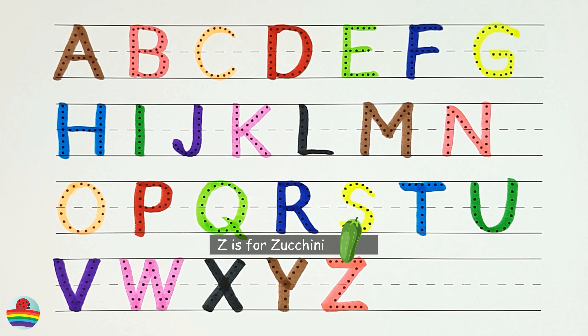X. X is for xylophone. X. Y. Y is for yellow. Y. Z. Z is for zucchini. Z.